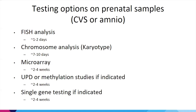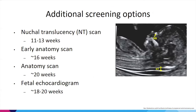Additional screening options include ultrasounds. A nuchal translucency scan between 11 and 13 weeks looks at the back of the fetus's neck — an increased measurement raises concern for chromosome conditions, heart defects, and other structural conditions. In some cases, an early anatomy scan around 16 weeks is recommended, as well as a 20-week anatomy scan. Depending on the chromosome involved and possible cardiac impact, a fetal echocardiogram may also be recommended.